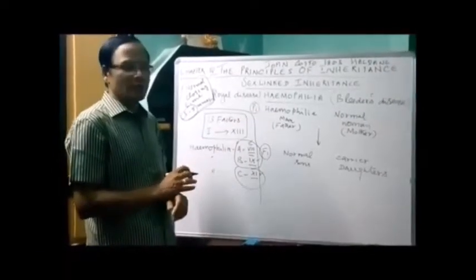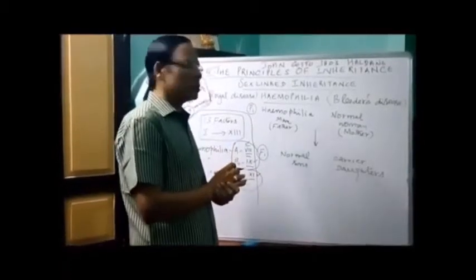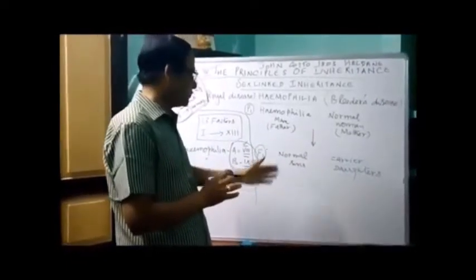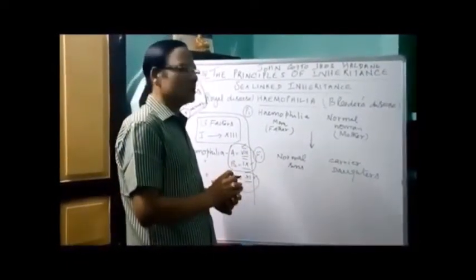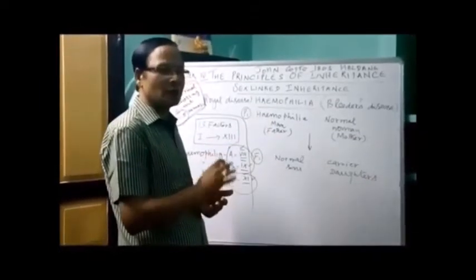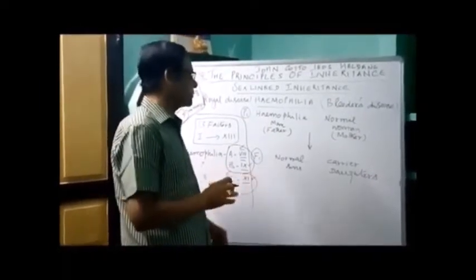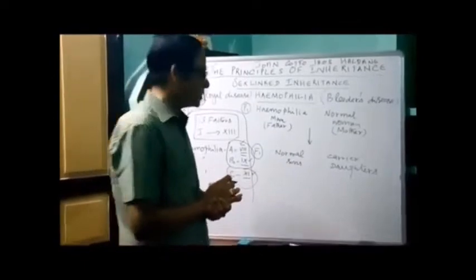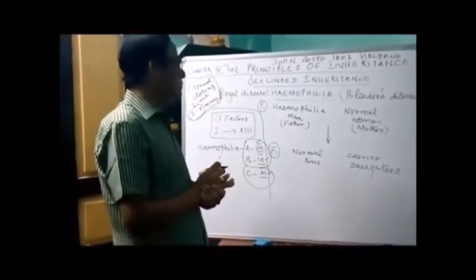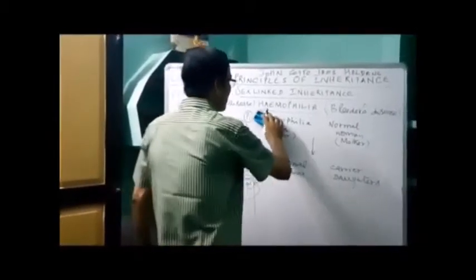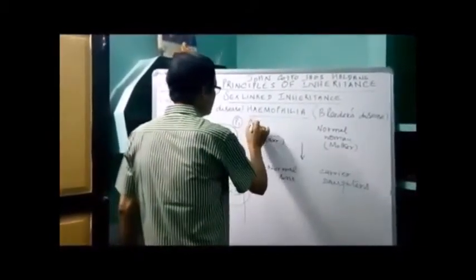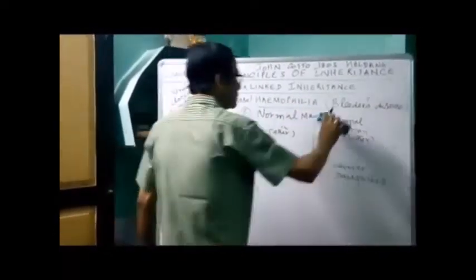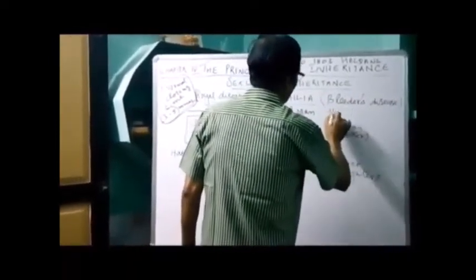I will represent simply what is happening. When there is a marriage between a hemophilia father and a normal mother, in the F1 generation all the sons are normal. When the father is hemophilic, the opposite occurs in sons — they are normal. This is the criss-cross pattern.